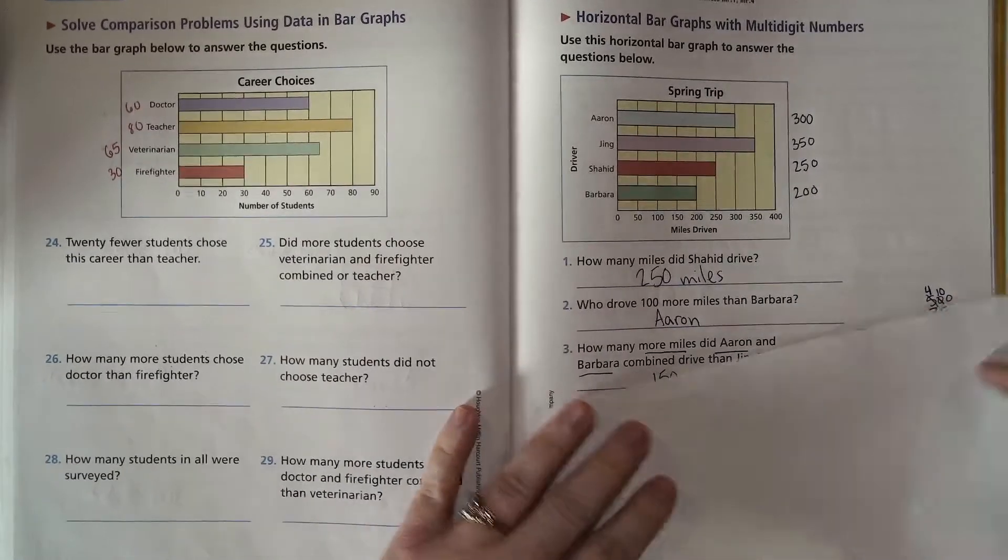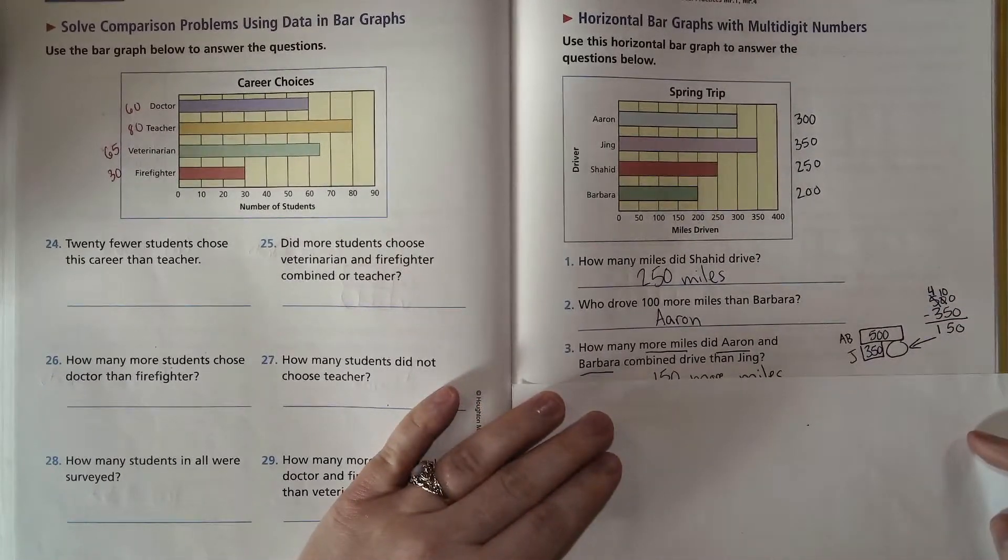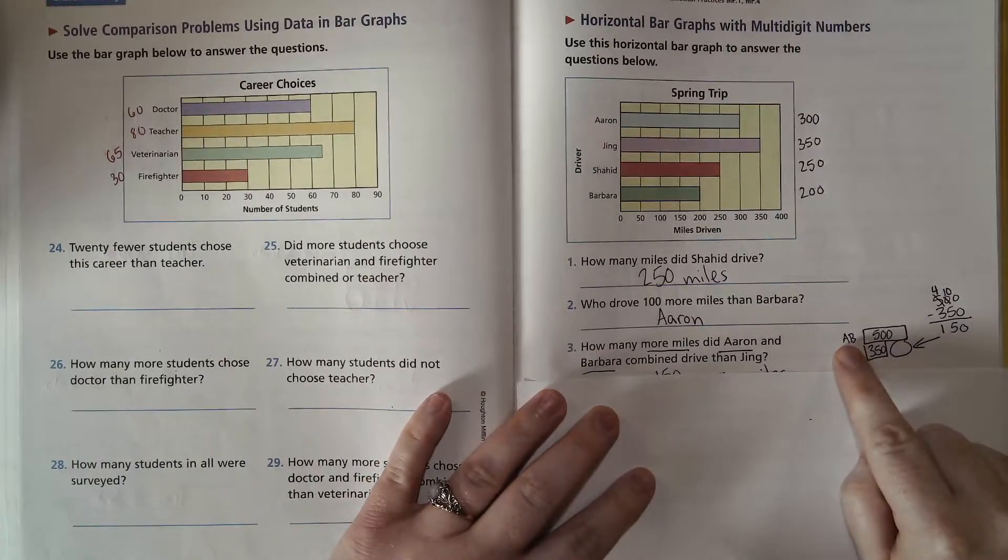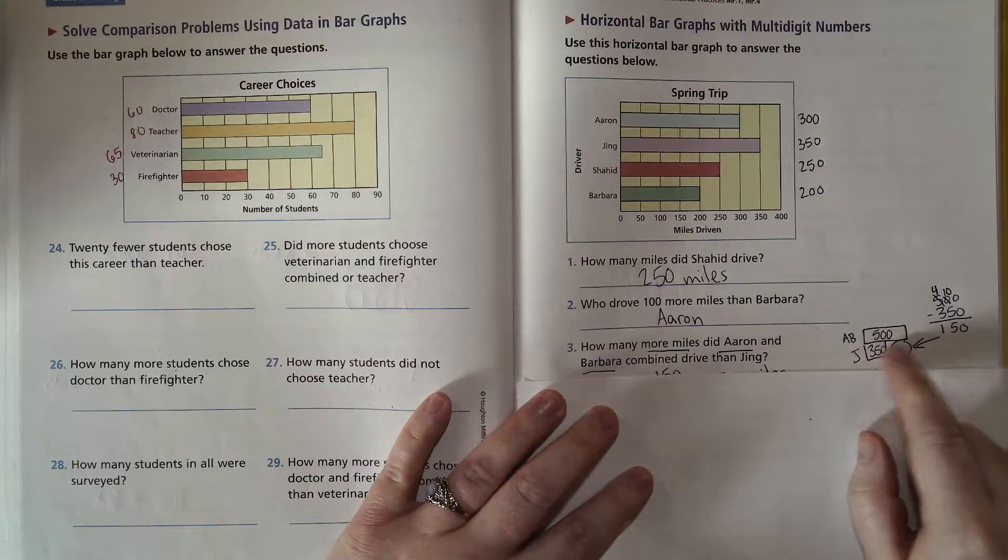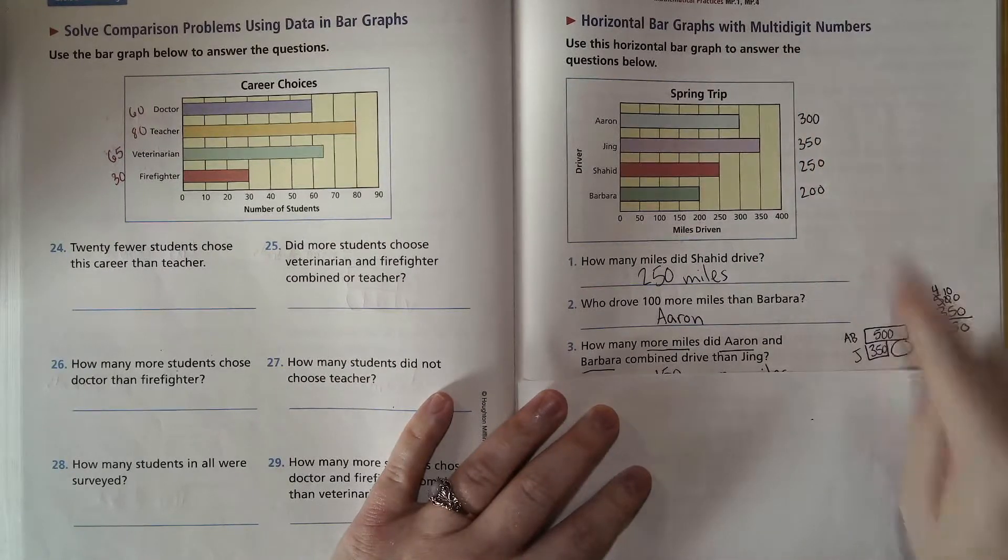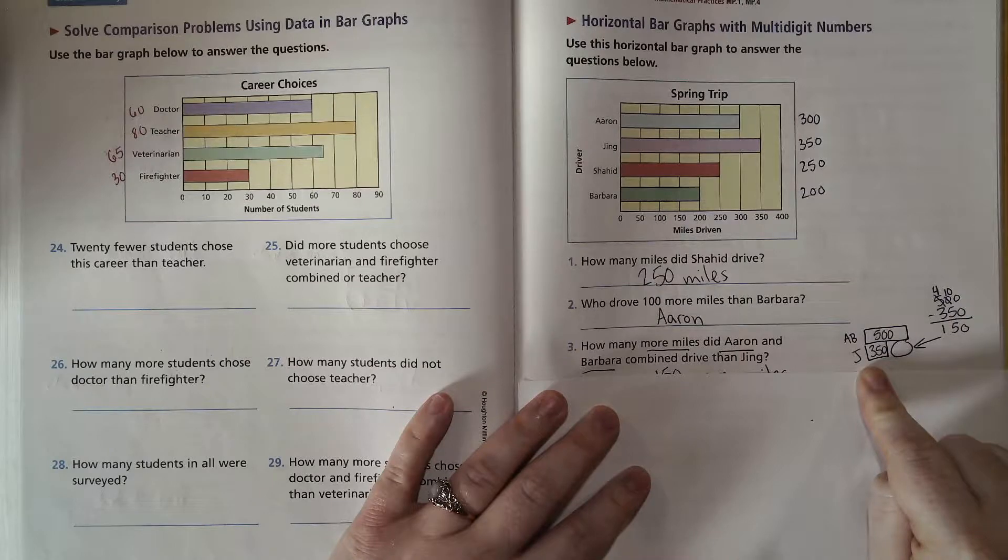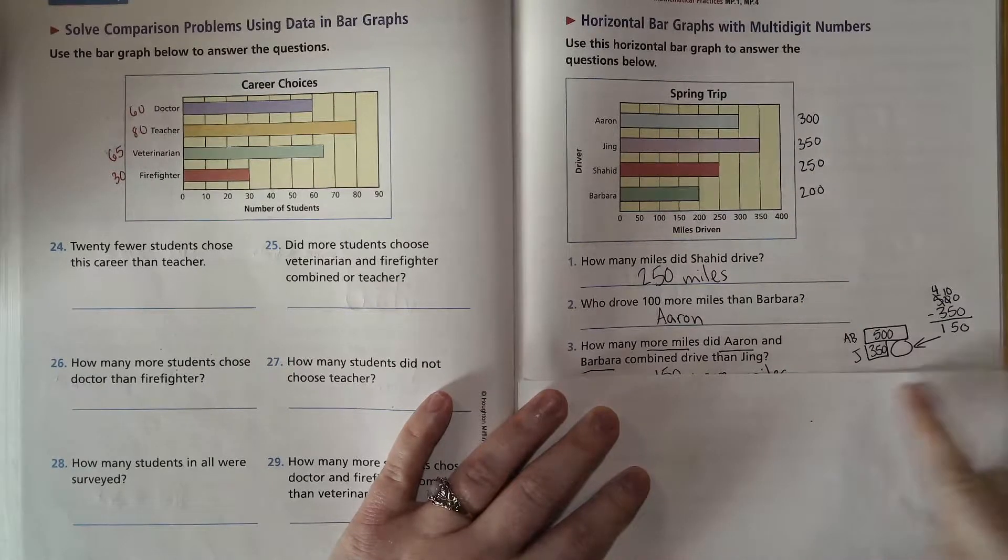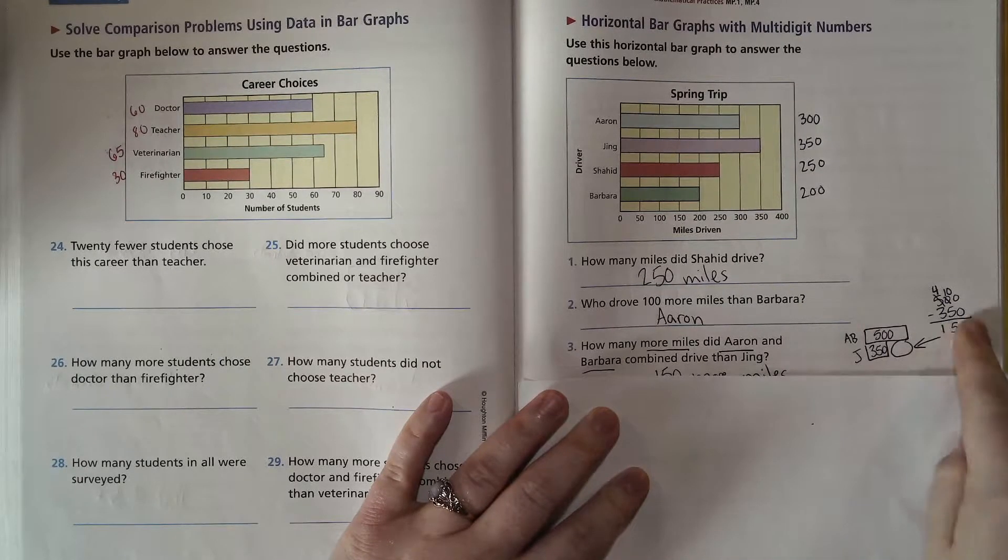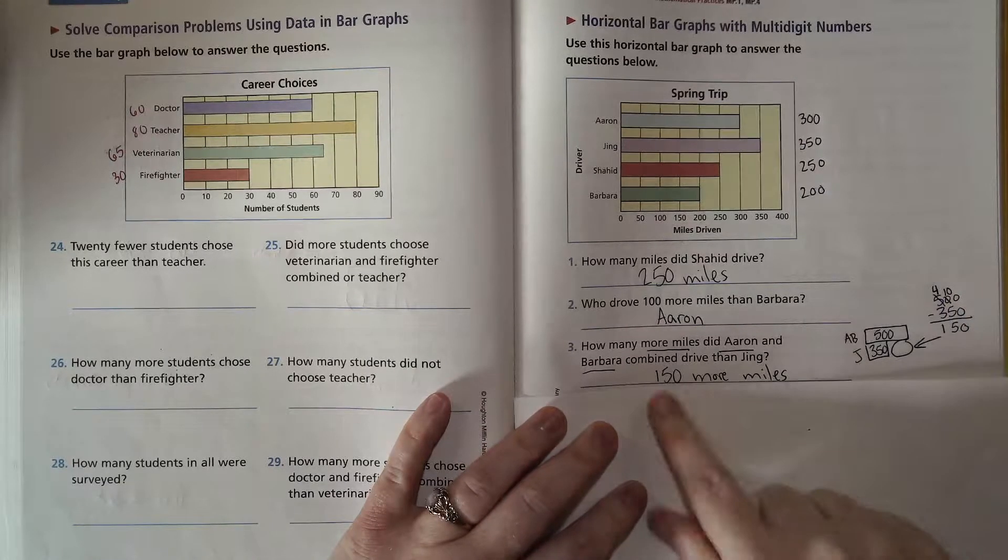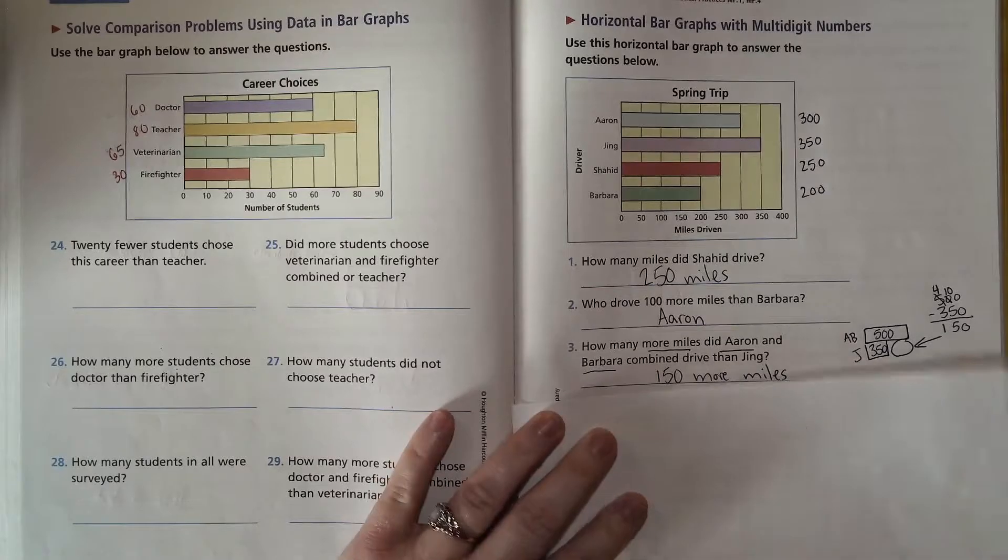Now next question: how many more miles did Aaron and Barbara combined drive than Jing? So first we're going to combine Aaron and Barbara, and 200 and 300 together makes 500. And then we'll make a comparison bar to compare that to Jing who had 350, and then we will subtract 350 from 500, and that is 150 more miles.